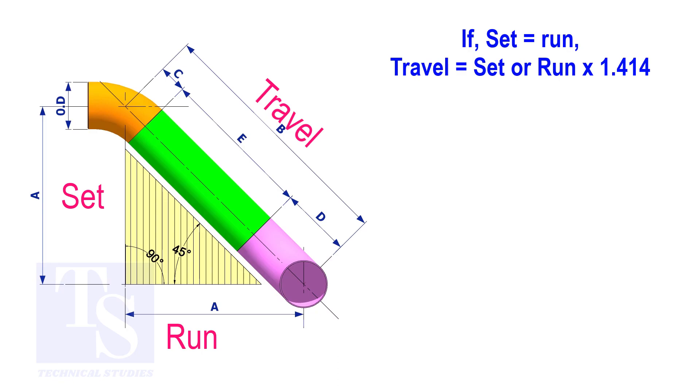Assume that the value of the set is 100. The value of the travel is 100 multiplied by 1.414 equals 141.4.